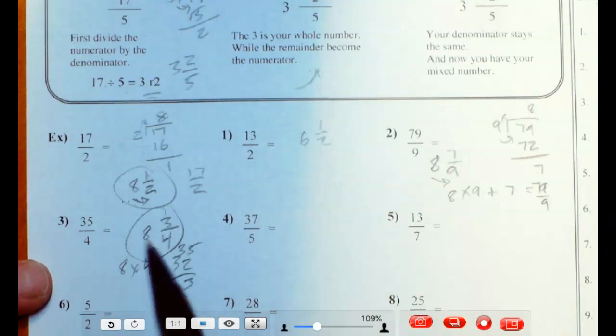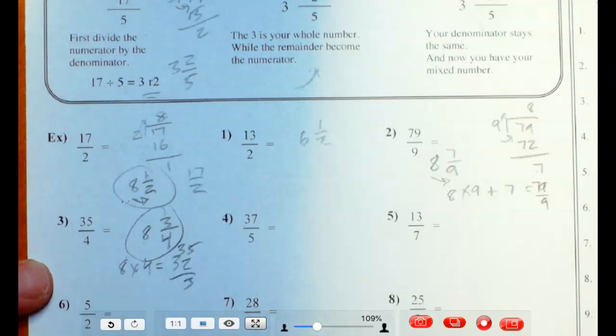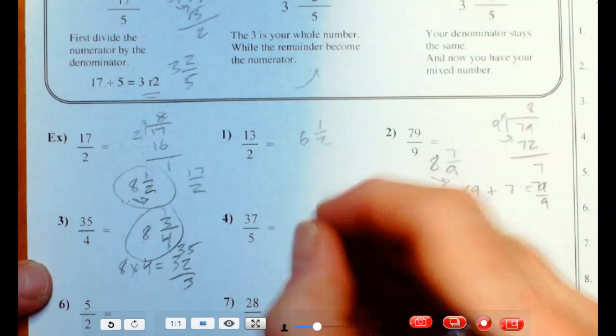Let's check to make sure my answer is right. 8 times 4 is 32 fourths. Plus 3 makes 35 fourths. And 37 fifths.